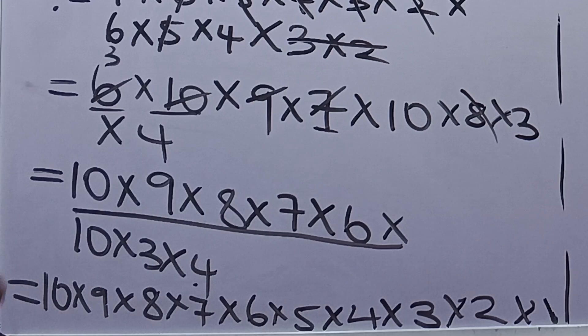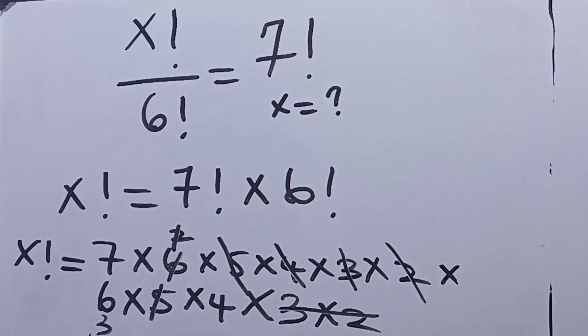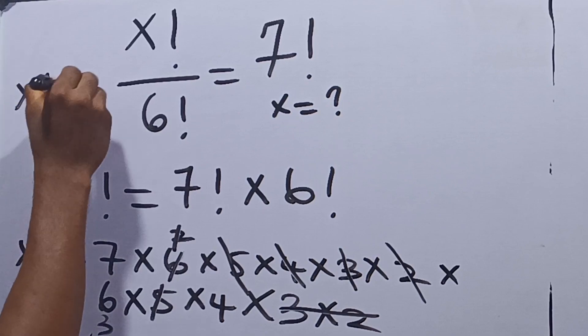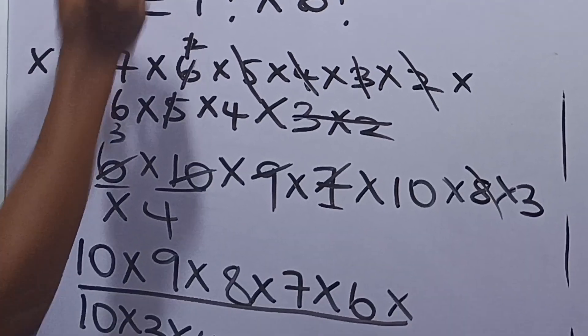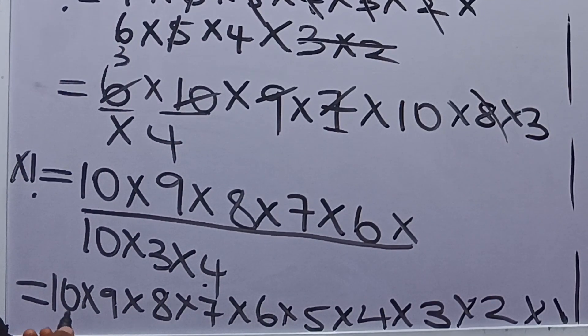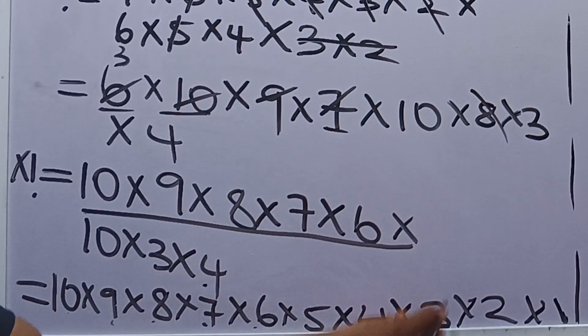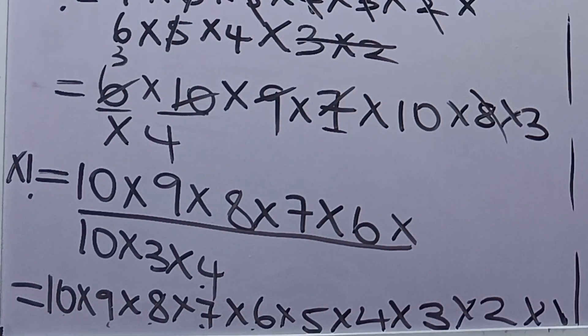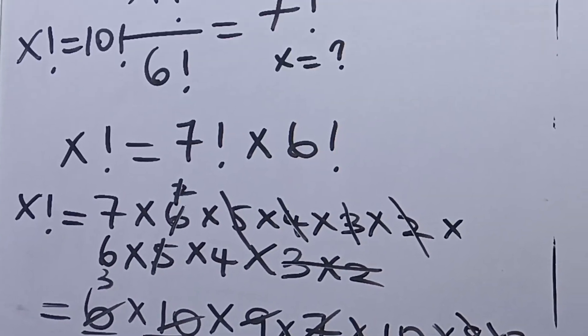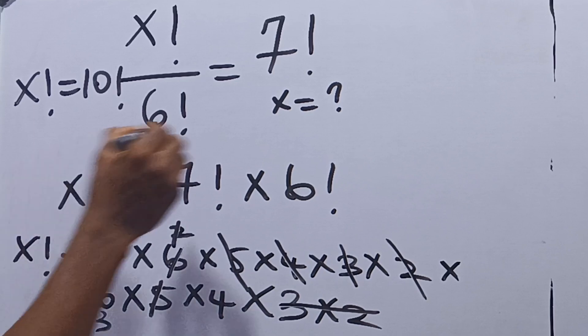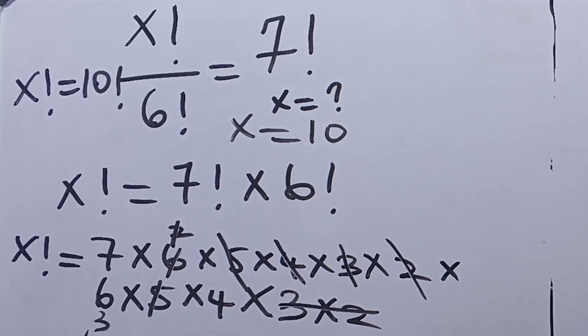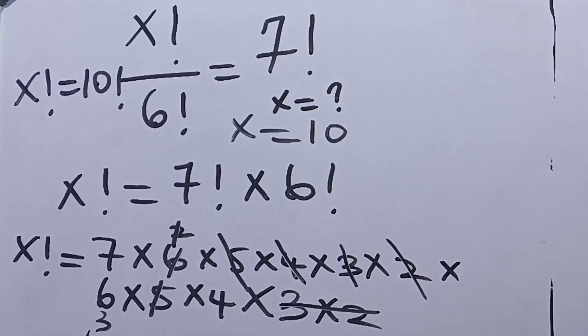Because 10 factorial is 10 times 9 times 8 times 7 times 6 times 5 times 4 times 3 times 2 times 1. So our answer to this question becomes that x factorial is equal to 10 factorial, invariably meaning that our x is equal to 10. So this becomes the final answer to this question. Thanks for watching.